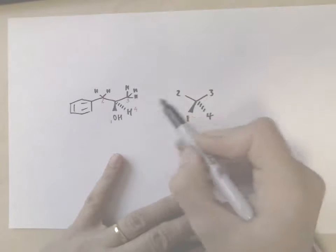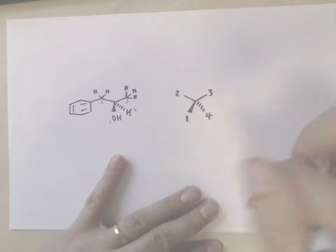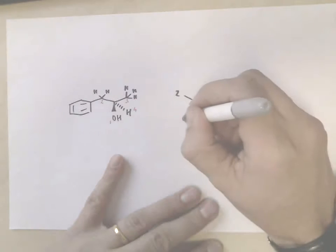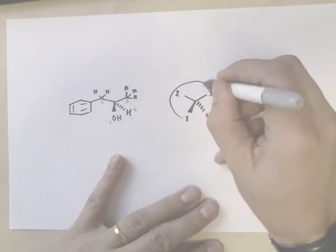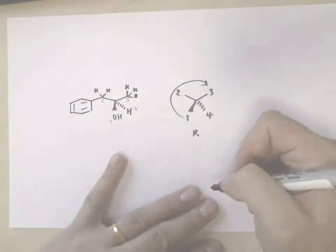And you can see that because four is going back under the desk, the groups go around clockwise. And so we say this is the R enantiomer.